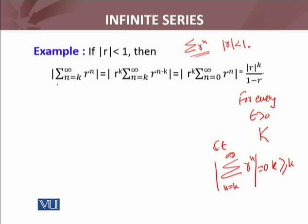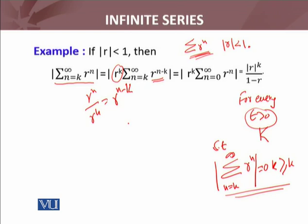Now, we consider summation n from k to infinity, r^n. For epsilon greater than 0 arbitrarily, we need to see if this result is valid for this convergent series or not. Now, I have multiplied and divided by r^k. The r^k multiplication is written here, r^k division is in fact here, r^n divided by r^k, which is r^(n-k), which you see written here.